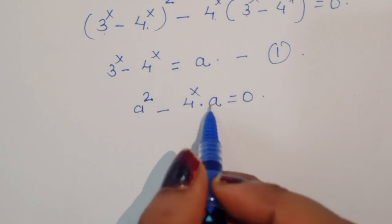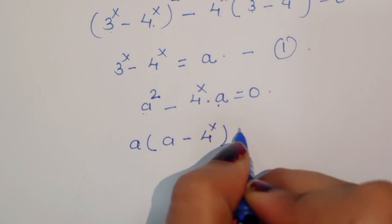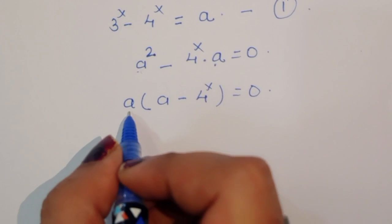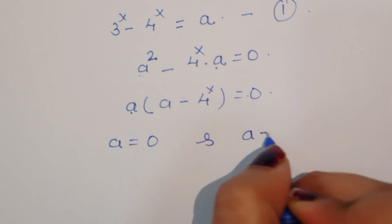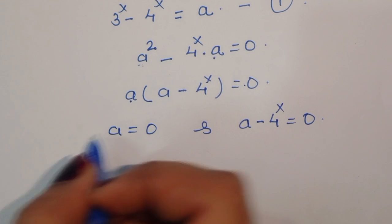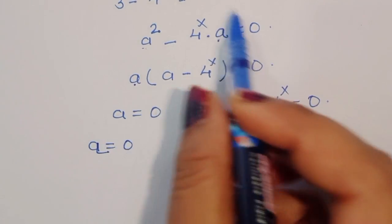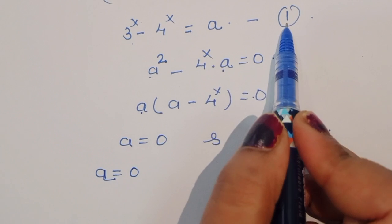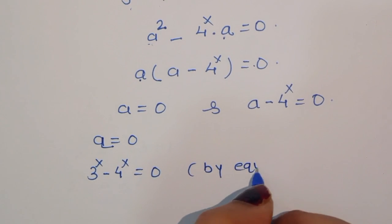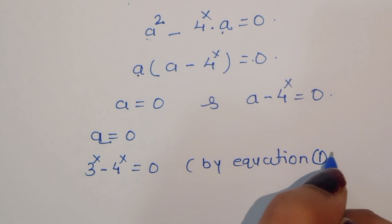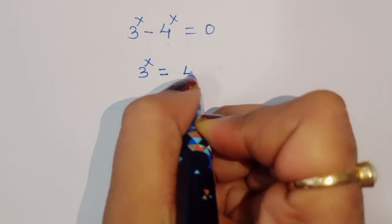This gives us two solutions. The first is A equal to 0, and the second is A minus 4^x equal to 0. Using equation 1, A equals (3^x minus 4^x), so for the first solution we write 3^x minus 4^x equal to 0.